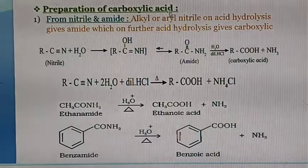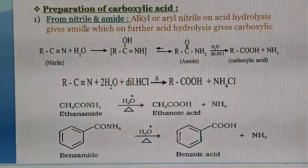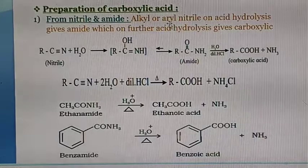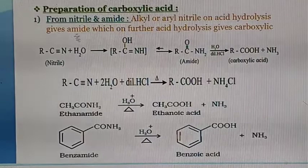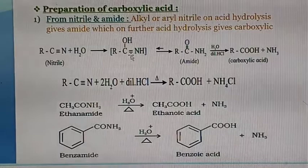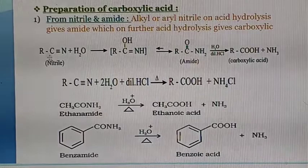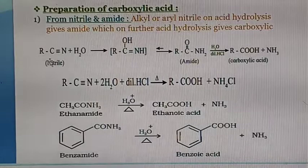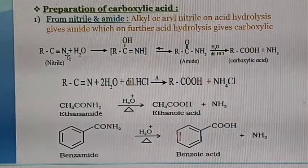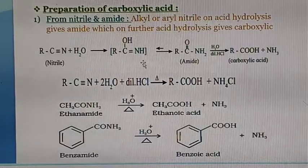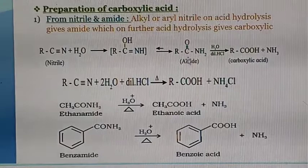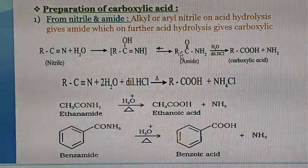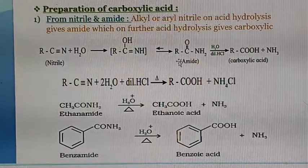First method is from nitrile and amide. For example, alkyl or aryl nitrile on acid hydrolysis gives amide, which on further acid hydrolysis gives carboxylic acids. When this enol form is converted into amide form, the keto and enol forms are at equilibrium — this is called tautomerism. So it gives amide, and this amide on acid hydrolysis gives carboxylic acids.